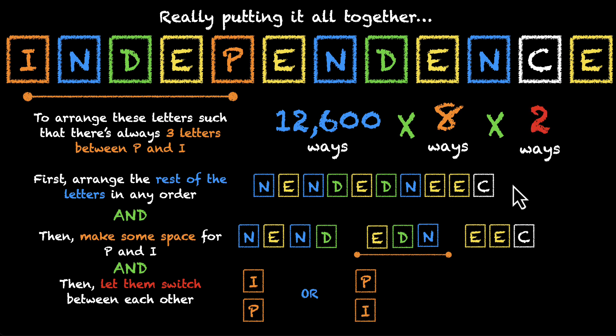And now it's time for drumroll. Multiplying these three gives us our final answer, 201,600 ways. This is the total number of ways in which you can arrange the letters of the word independence such that this complex condition, in fact, this seemingly complex condition that doesn't seem that complex anymore, because we have now learned how to break it down into its individual parts. This condition holds true that P and I have three letters between them. And that's pretty much it. I genuinely hope that you enjoyed working on this problem as much as I did.